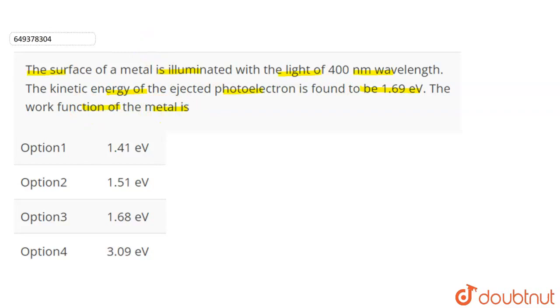We need to calculate the work function of the metal. We have a metal with incident photon, and the wavelength is 400 nanometer. This photon's wavelength is given as 400 nanometer.